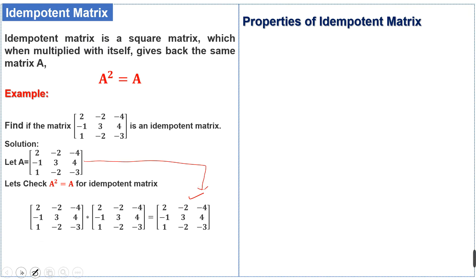Hence A square is equal to the given matrix A. This means the given matrix A is an idempotent matrix. Properties of idempotent matrix: the eigenvalues of an idempotent matrix is either 0 or 1.